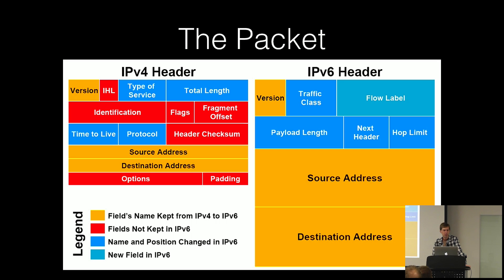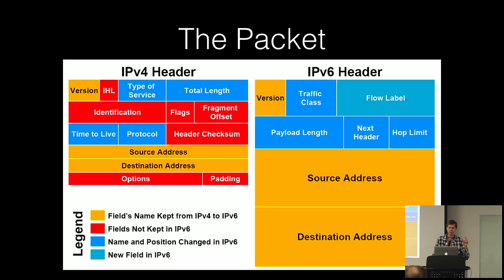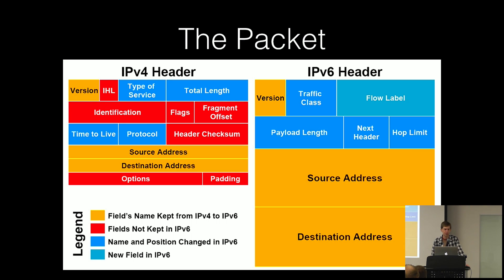The TTL field — called 'hop limit' in IPv6 — is essentially how traceroute works: it incrementally sends packets with higher and higher TTLs. As a layer 3 device receives a packet, it decrements the TTL by one; if it hits zero, it drops the packet and sends back an ICMP 'time to live exceeded' message. If systems support all of that, traceroute can show you the topology of your network.